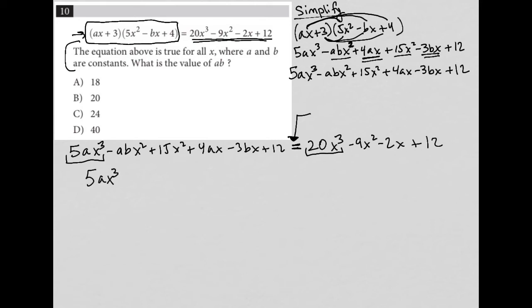So that means that this five AX cubed, in order for the left hand side of the equation to be equivalent to the right hand side of the equation, five AX cubed must equal 20 X cubed. And if that's the case, A must be four.